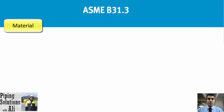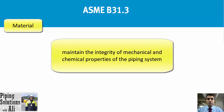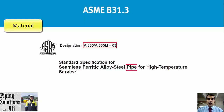Let's talk a little about material. The material of components which are assembled together must be compatible in order to maintain the integrity of mechanical and chemical properties of the piping system. The material of the pipe that we already selected the thickness for was ASTM A335 Grade P11 — the standard specification for seamless ferritic alloy steel pipe for high temperature service.